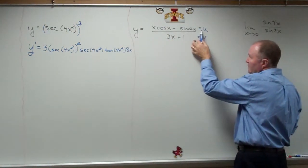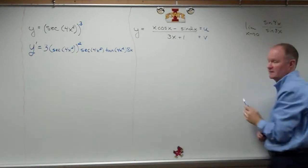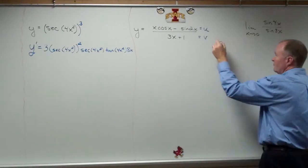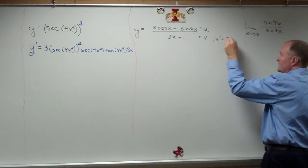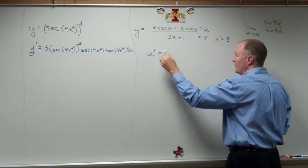So, the u prime, I have to mess with that. The v prime, I mess with that. V prime is easy, isn't it? V prime is just 3. But u prime is a bit of a challenge.